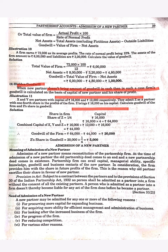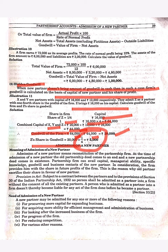Z's share is 1/4 and capital is ₹16,000. For 1 full share, multiply by 4: total firm value = ₹64,000. Combined capital of X, Y, and Z = ₹16,000 + ₹12,000 + ₹16,000 = ₹44,000. Goodwill of the firm = ₹64,000 − ₹44,000 = ₹20,000. Z's share in goodwill = ₹20,000 × 1/4 = ₹5,000.